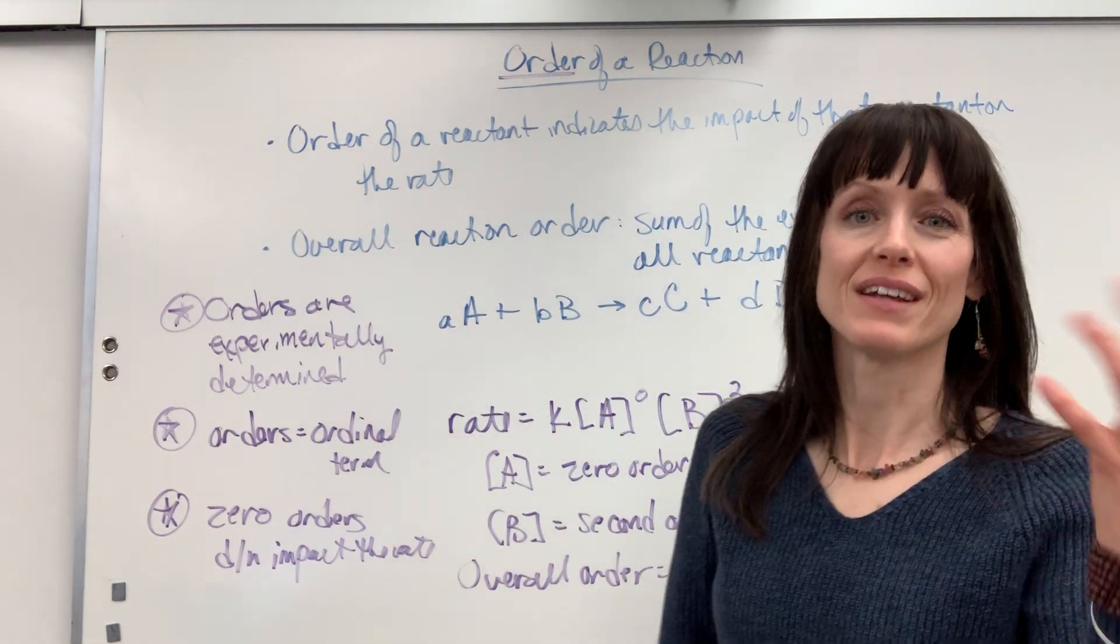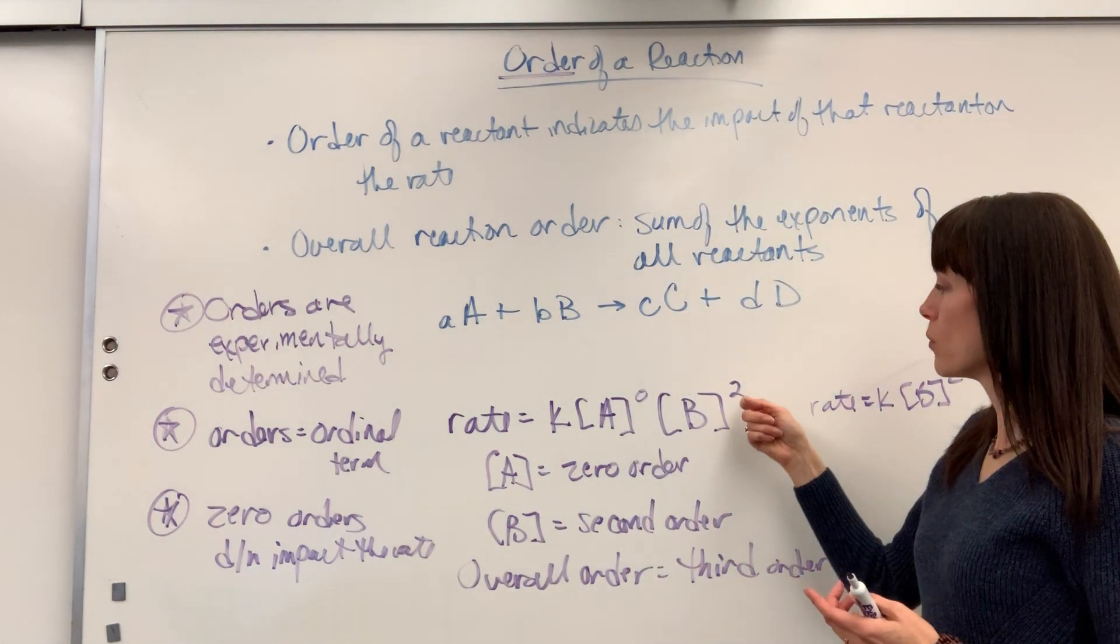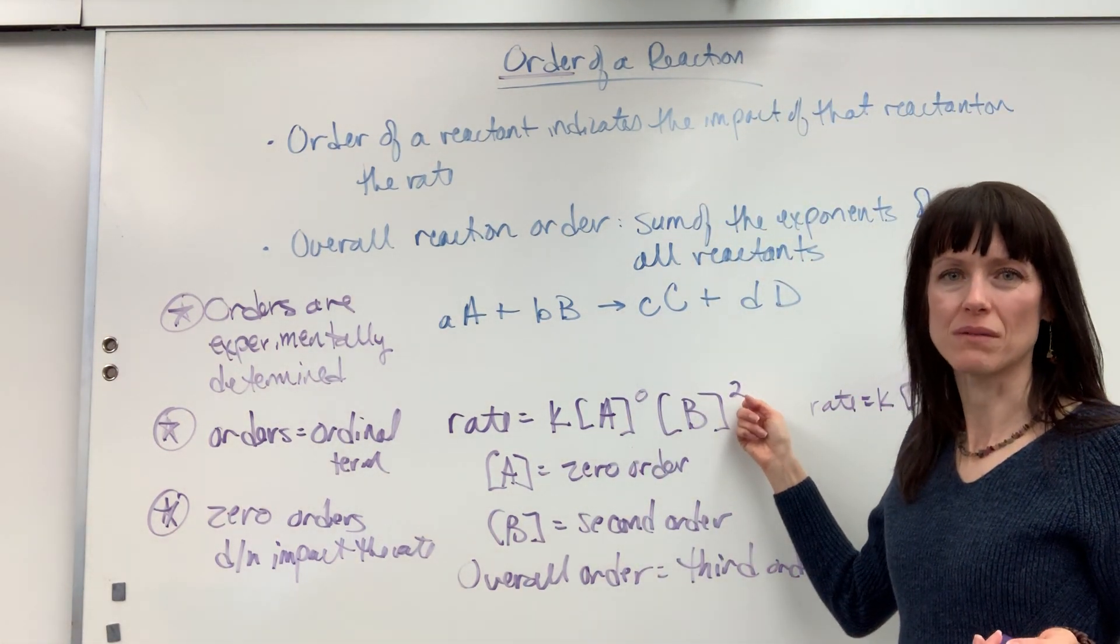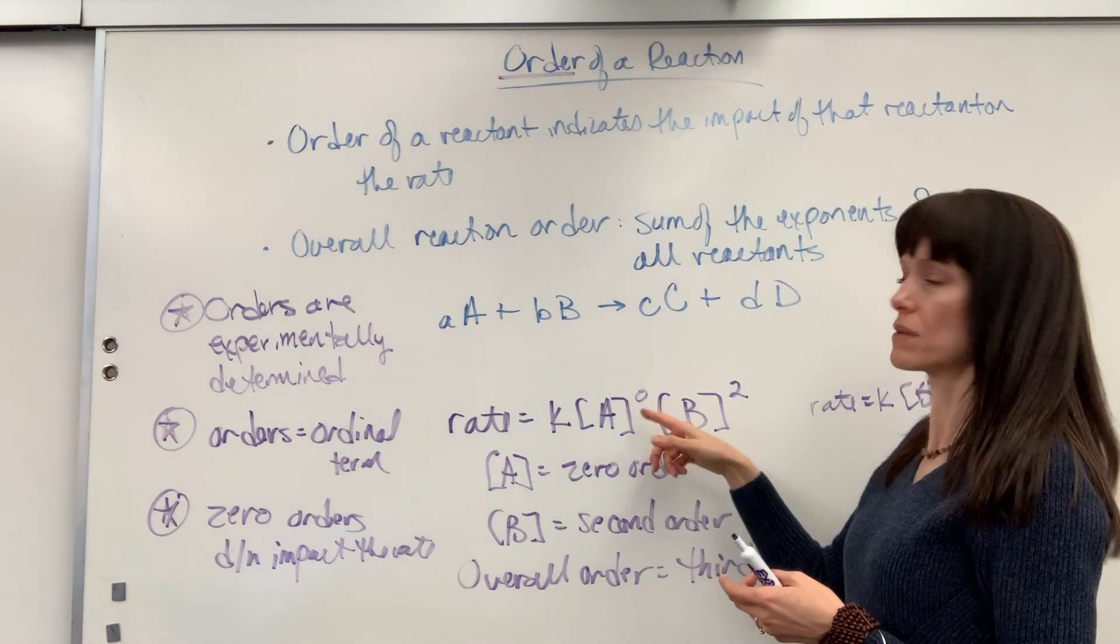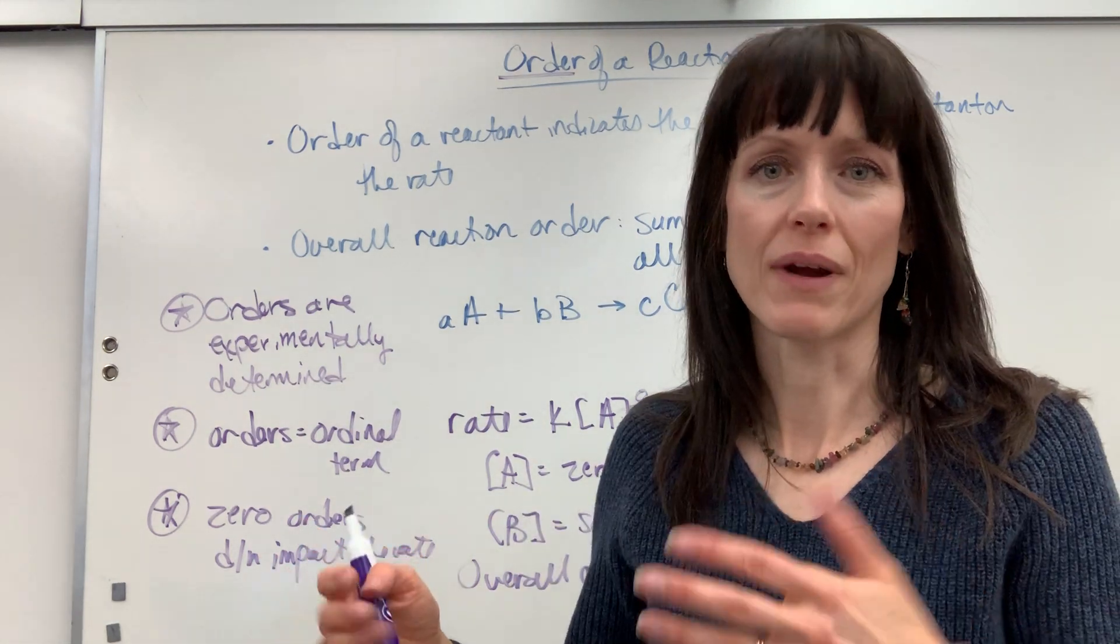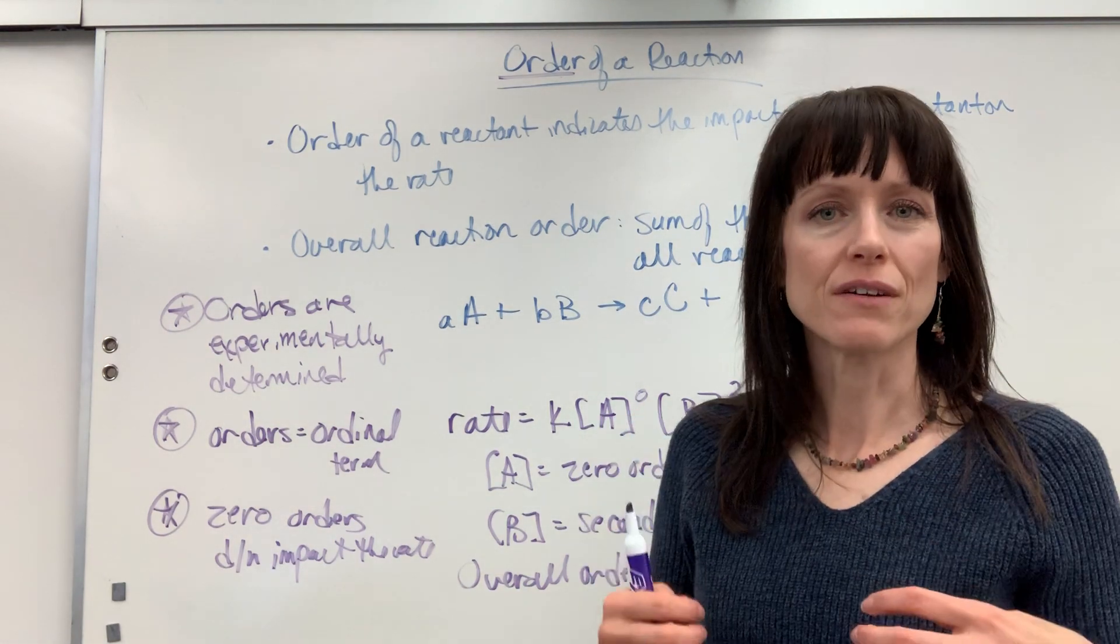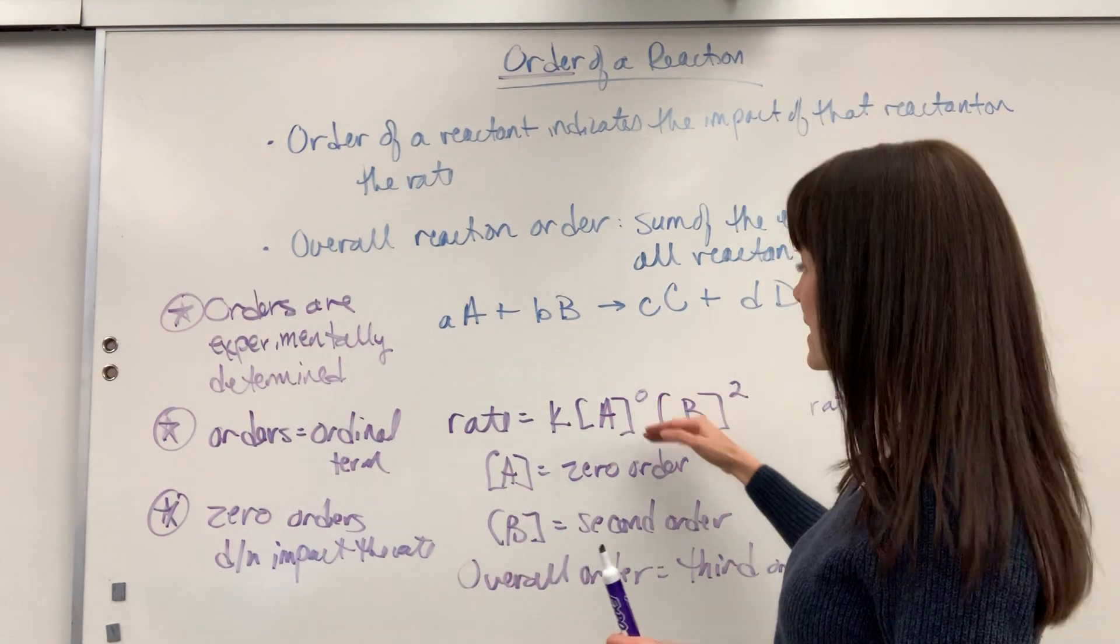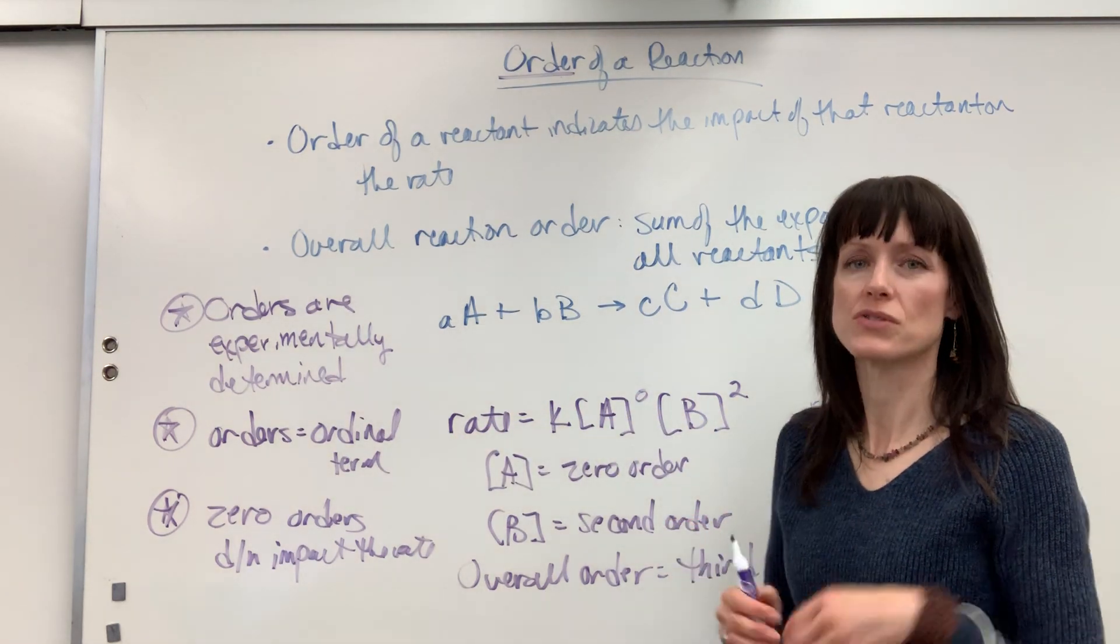Now, I have another video where you can think out, well, what does it mean? What does a second order mean? It means that you're actually going to quadruple the rate. Or what does a first order mean? It just means that you're going to double the rate if you double the concentration. I have an entire video on how to predict a change of rate based on the orders. So watch that video.